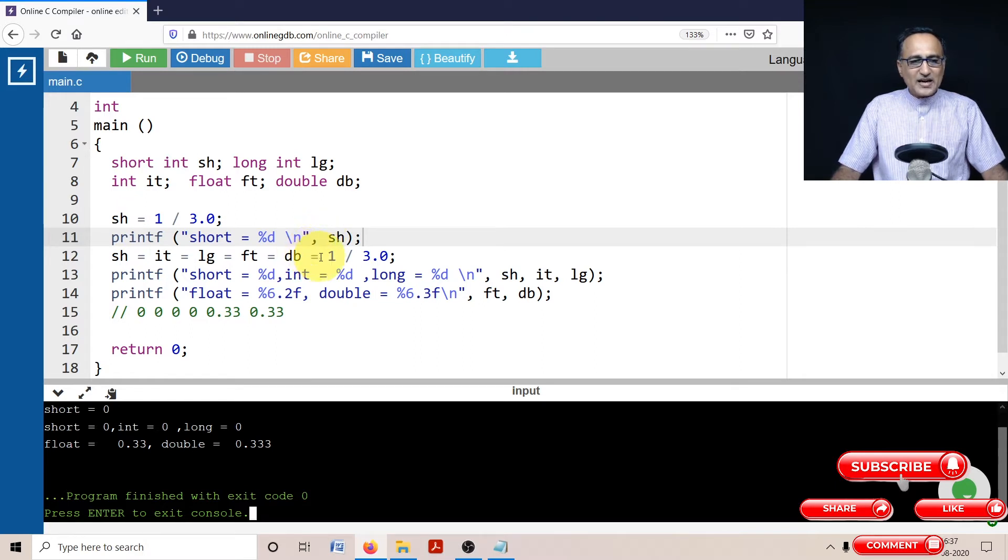Now I'm doing 1 upon 3.0. It gets upgraded again to 1.0. Since db is a double data type, it can easily store this value.